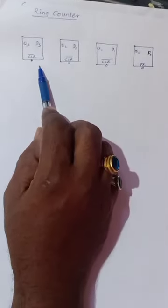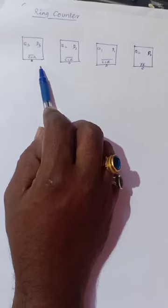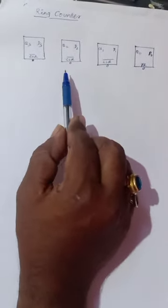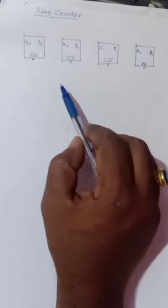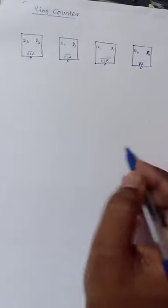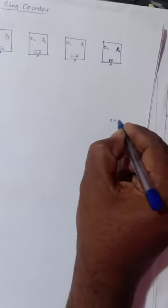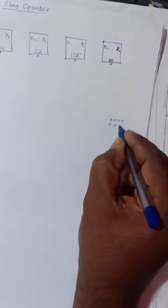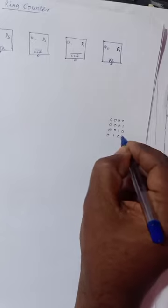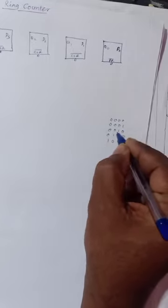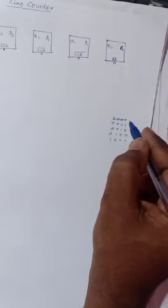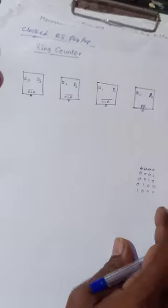Now we are going to look at the ring counter. The ring counter counts in a form where the output has only one bit high at a time. So if the output is 0001, the next output is 0010, then 0100, then 1000 — it increases by just one bit, shifting from left to right, and then cycles again.